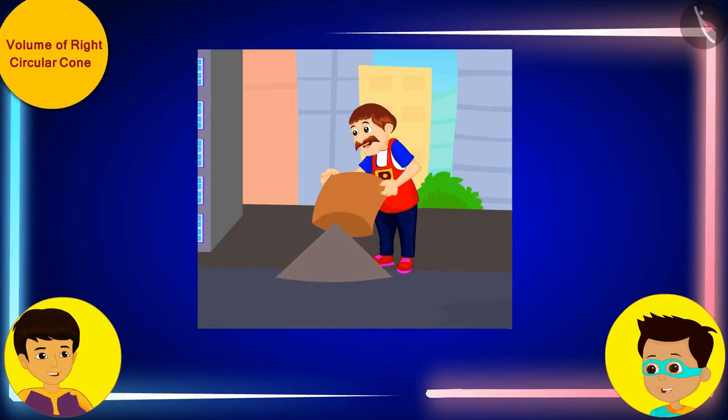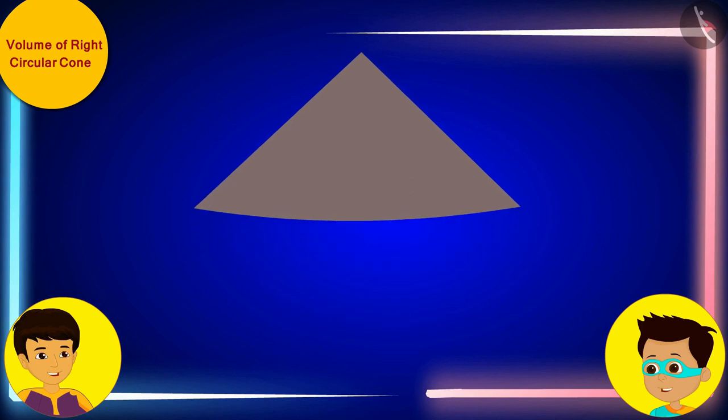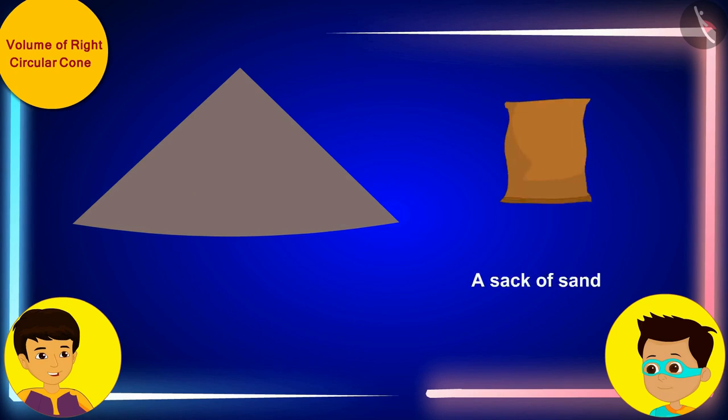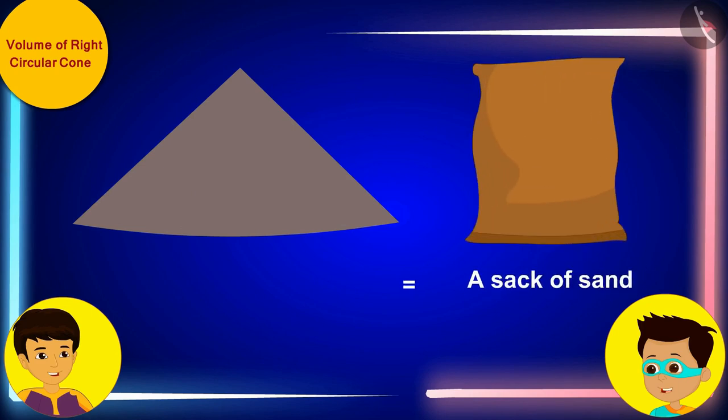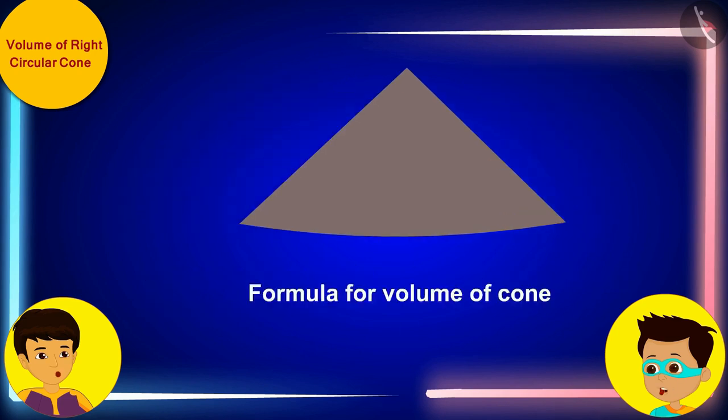It's so easy, let us find the answer through mathematics. That means it's math time! Look Manas, uncle has poured a sack full of sand on the ground. It's a conical pile of sand and you already know that the space enclosed by any object is equal to its volume. This means that the amount of sand in this pile is equal to the volume of the pile of this conical sand.